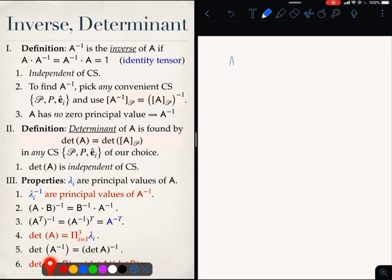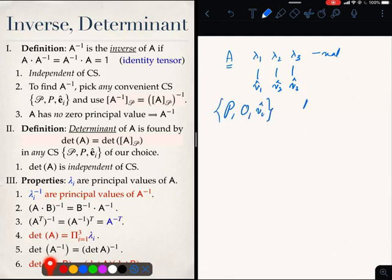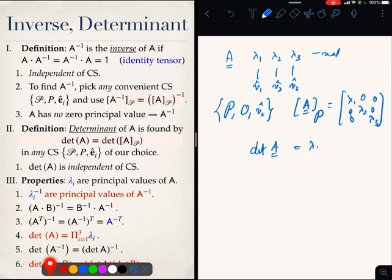That means, imagine if I have a tensor which has three different principal values which are real. Take A to be symmetric if you wish. Then correspondingly I will have three principal vectors and a principal coordinate system. And in the principal coordinate system A will be given by lambda 1, lambda 2, lambda 3 and everything else will be zeros. The determinant of A because it is independent of coordinate system is therefore simply lambda 1, lambda 2, lambda 3. So that kind of proves this.